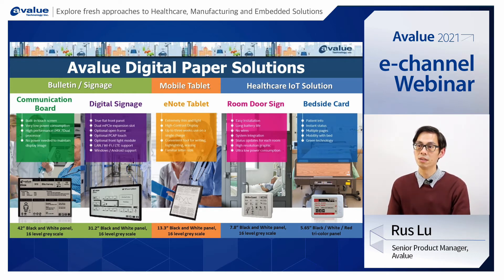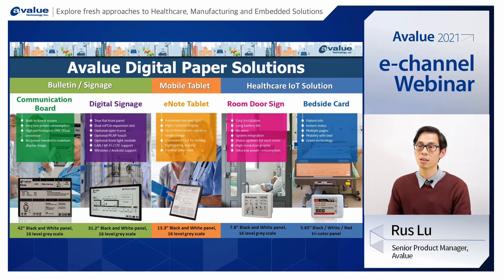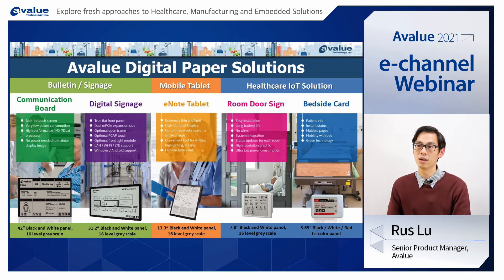The second is the 31.2-inch e-ink display. The main purpose of this product is for digital signage, like a billboard or bulletin display. This product is optionally available with touch, which means we can provide interactive service or information in the hospital or other healthcare environment.